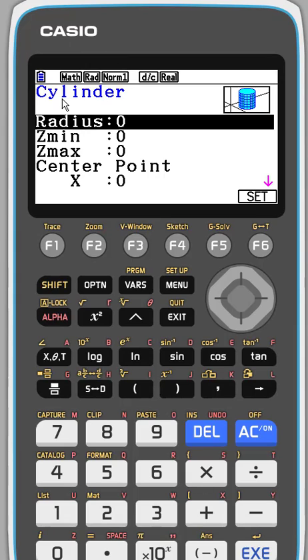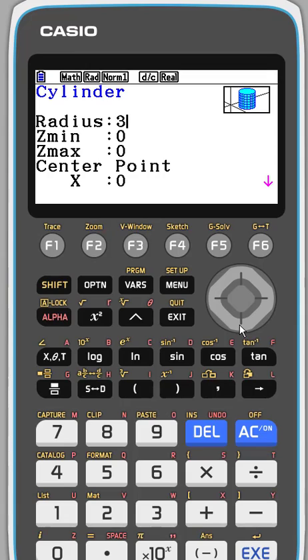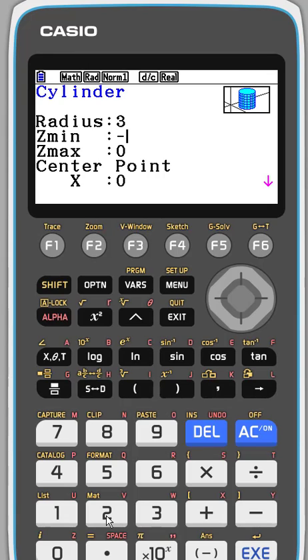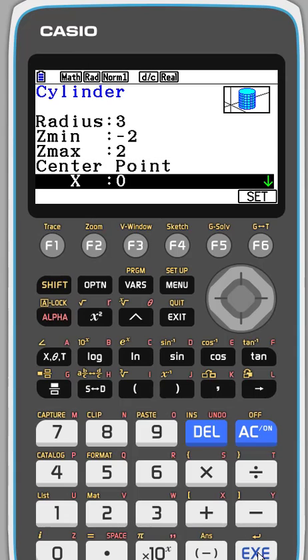And here it's going to ask me to enter some things, my radius. So let's use a radius of three for our cylinder. And then we're going to hit execute to center it. Okay, let's do our Z min and Z max. Let's make them negative two for the min and a positive two for the max.